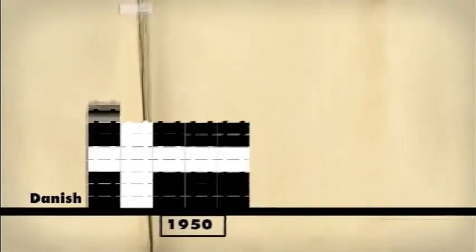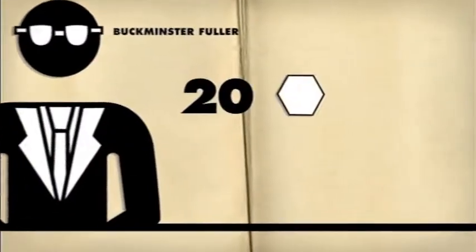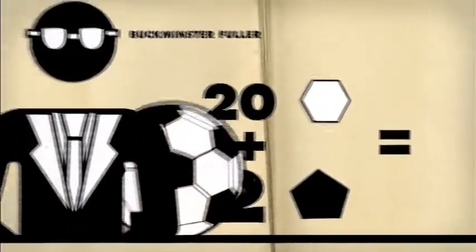It was the Danish who, inspired by architect Buckminster Fuller, combined 20 hexagons and 12 pentagons to make a truncated icosahedron.